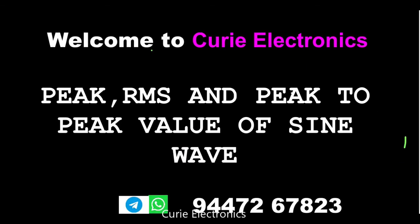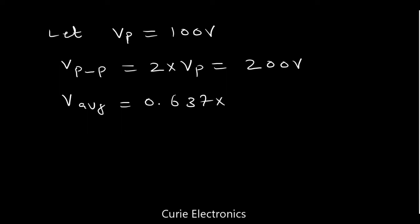If you know this much, we can convert. See, simply if you take one example, let Vp equal to 100 volt AC. It is for AC, sine wave. Now, what is Vp-p? It is two times of Vp, that is 200 volt. What about V average? It is 0.637 times of Vp, that is 63.7 volt. What about Vrms? That is 0.707 times of Vp, which equals 70.7 volt.